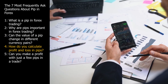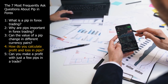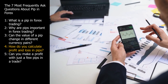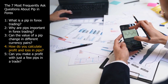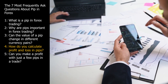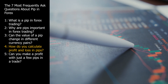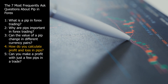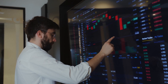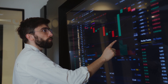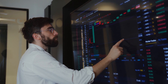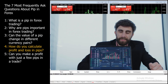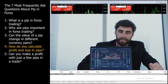Question 4. How do you calculate profit and loss in PIPs? To calculate profit and loss in PIPs in Forex trading, you need to consider the following factors: 1. Position Size — determine the size of your trading position in lots. A standard lot is 100,000 units, a mini lot is 10,000 units, and a micro lot is 1,000 units. 2. Entry Price — note the price at which you enter the trade, for example 1.12345. 3. Exit Price — record the price at which you close the trade. 4. Currency Pair — identify the specific currency pair you're trading, as the PIP value can vary between pairs.